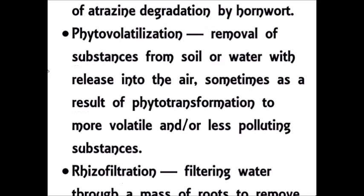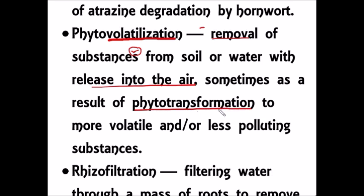The next mechanism is phytovolatilization. Volatilization means removing substances and converting them into gaseous form and releasing them into the air. Plants remove substances from the soil or water and release them into the air. The internal conversion mechanism is called phytotransformation, but the overall process is called phytovolatilization.